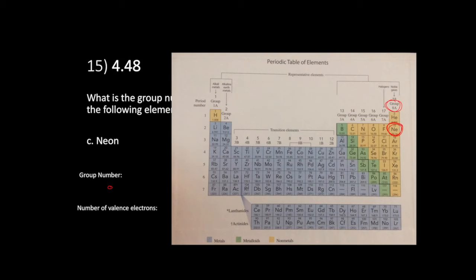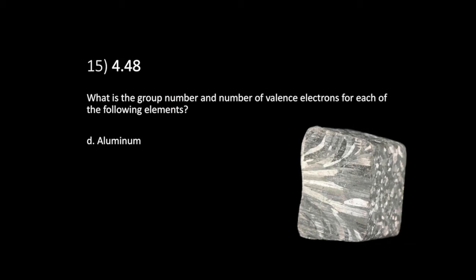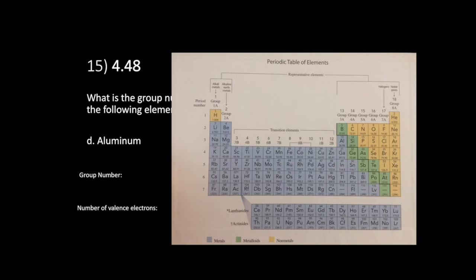How about neon? Neon is at the top right of the periodic table in group 8A, so the group number is 8A and neon has eight valence electrons. How about aluminum? Aluminum is at the top middle in group 3A, so the group number is 3A and the number of valence electrons around any aluminum atom is three.